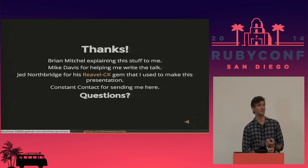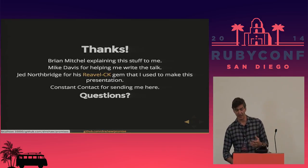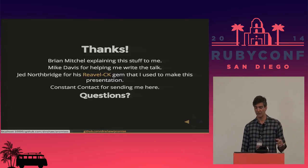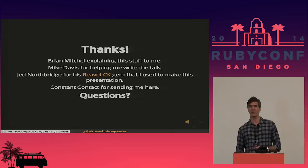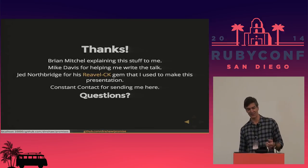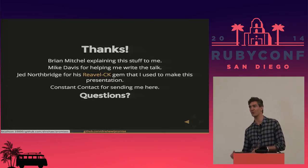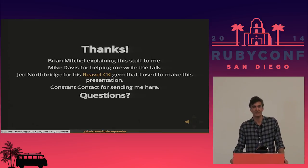Fulfill and reject look exactly the same except for the value of state — we set the state, set the value, and call resolve_steps, which loops through all the steps in pending_steps and calls resolve on them. And that really is the entire codebase. Thank you for listening. We kind of just started with this stuff — if anybody is interested or has thoughts about implementations or usages, I would love to chat. Tomorrow night, Constant Contact is hosting a drink-up, open coding night. Free beer and wine. Thanks to Brian Mitchell who explained all this to me, Mike Davis for helping me write the talk, and Jed for writing a gem for making presentations out of a markdown file.